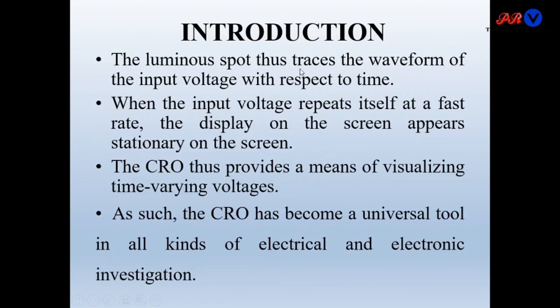The luminous spot thus traces the waveform of the input voltage with respect to time, and in this way it will visualize the input signal. When the input voltage repeats itself at a fast rate, the display on the screen appears stationary. When this input voltage is repeating at a fast rate, the luminous spot produces a stationary wave on the screen.